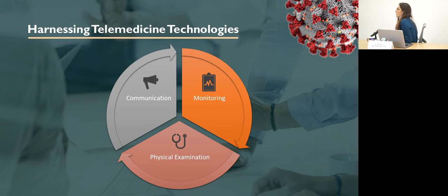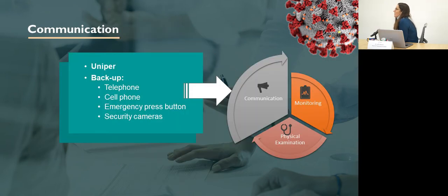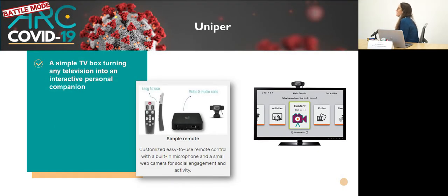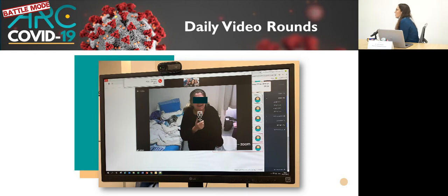First of all, the most important was communication, because we knew we had to communicate with the patients in the best way we could in order to prevent our entrance there. Then we also wanted to monitor them, and we wanted to be able to perform physical examination. So for communication, we used all kinds of backups, like telephones, cell phones, and emergency press buttons. But the most effective communication means was provided by an Israeli startup, Uniper. Uniper is a simple TV box that we put on the TV screen, and it turns the television into an interactive TV. It has a customized, easy-to-use remote control with a built-in microphone and a small web camera.